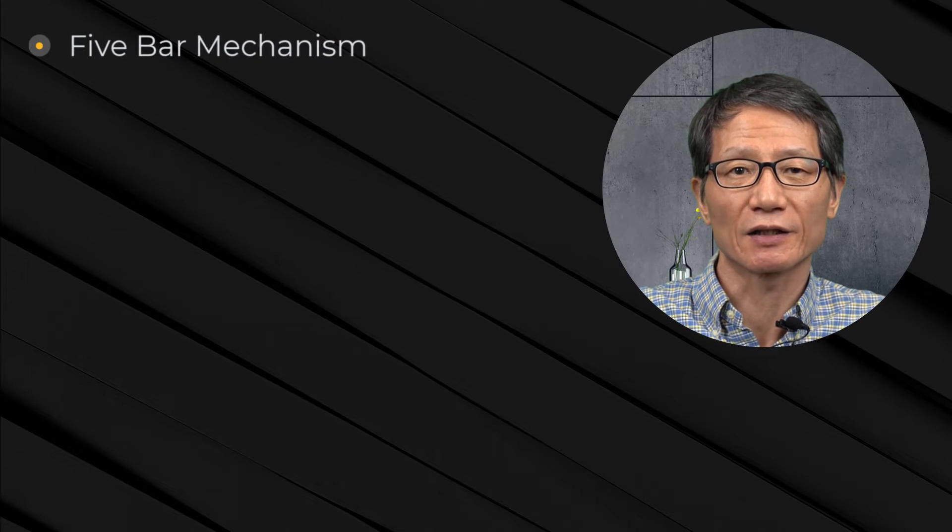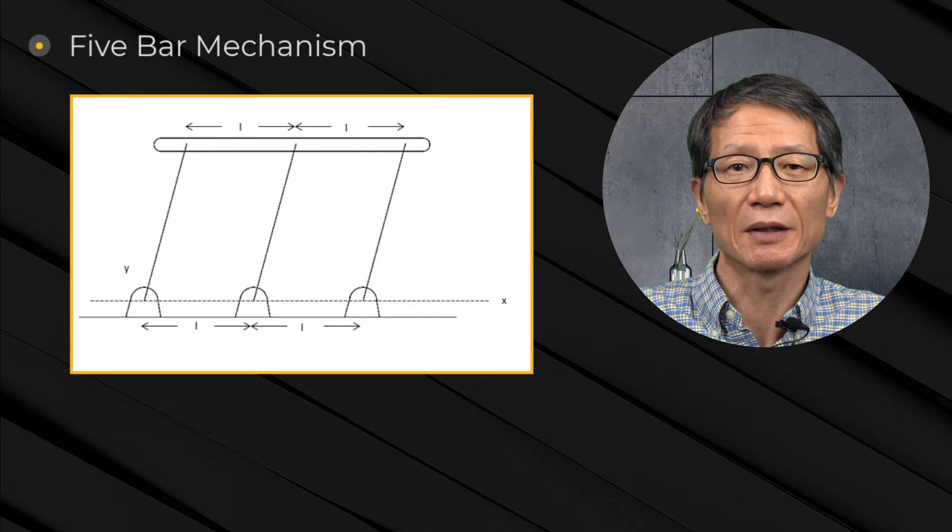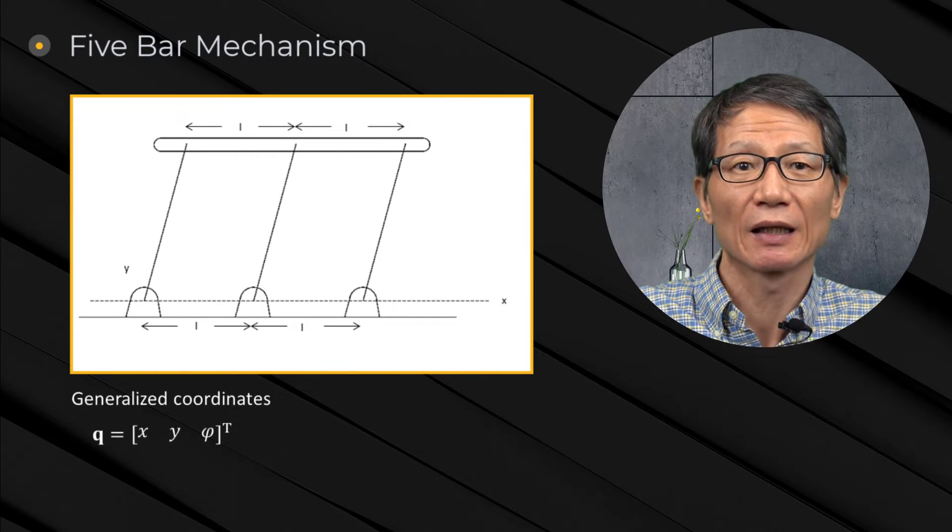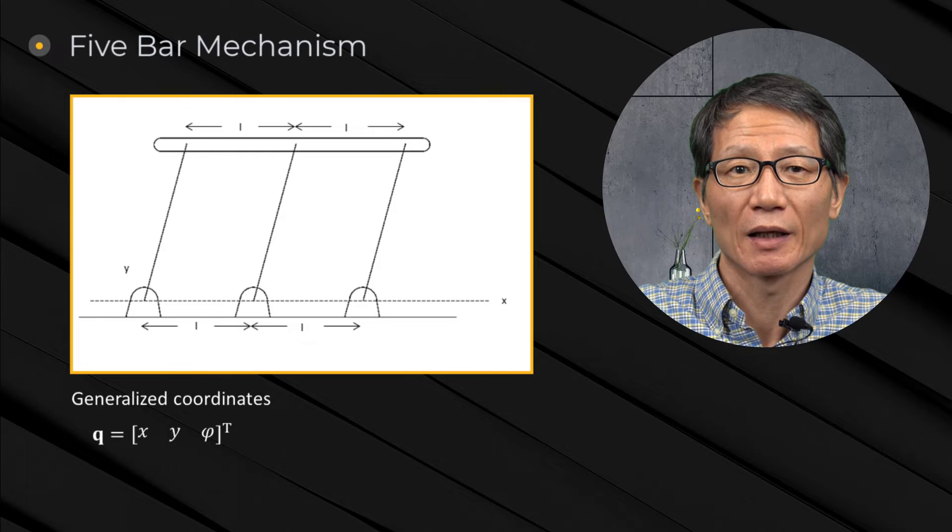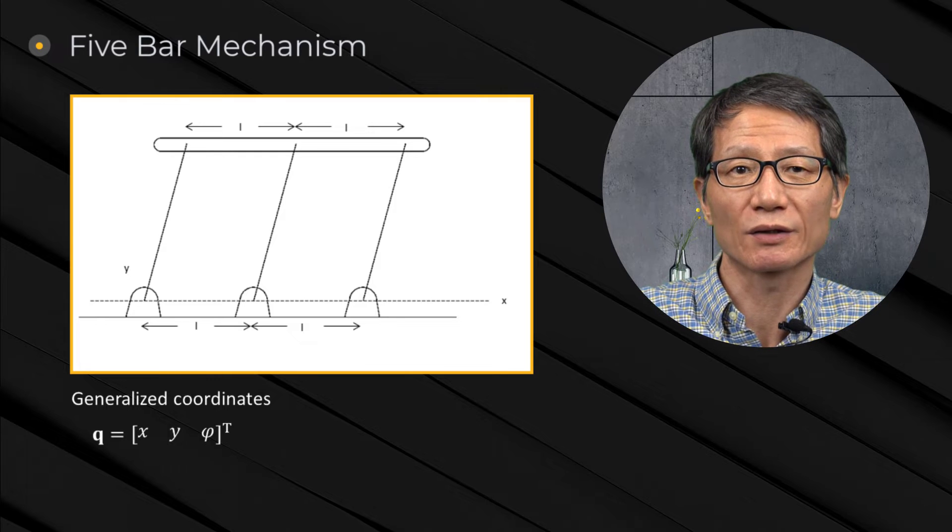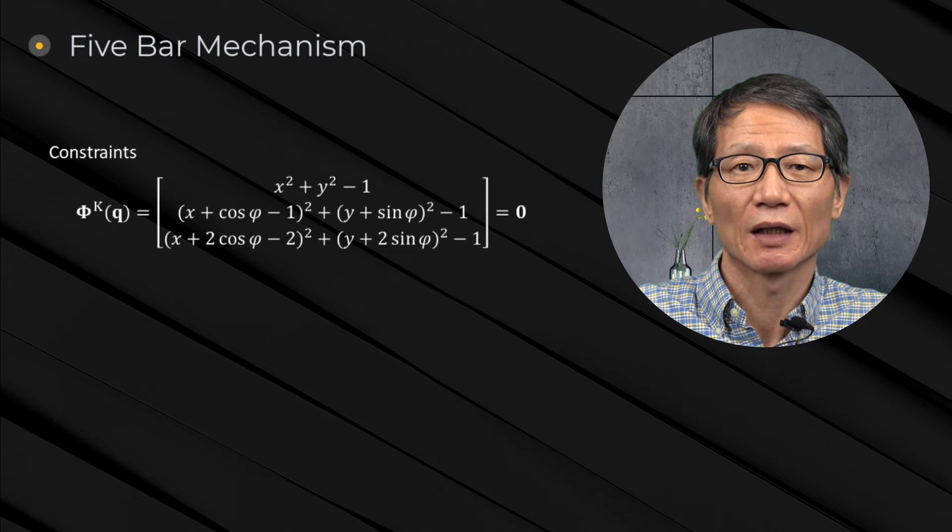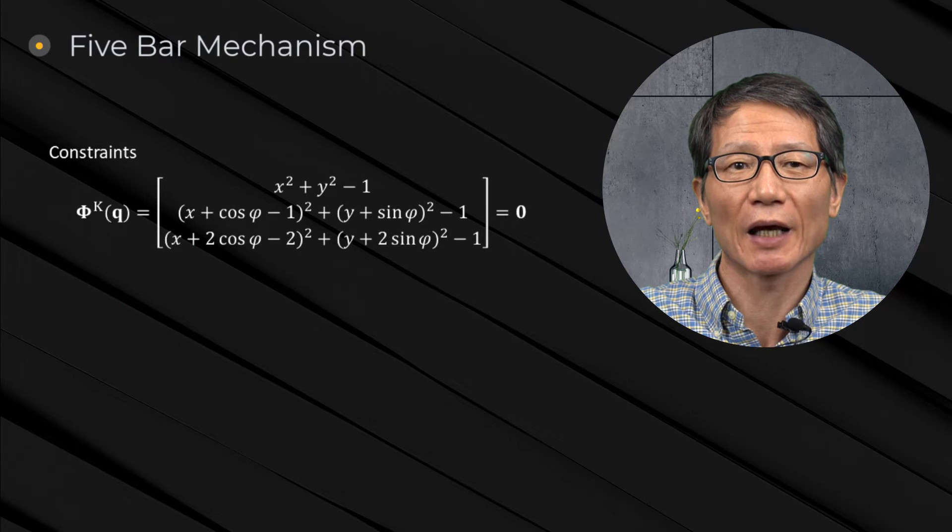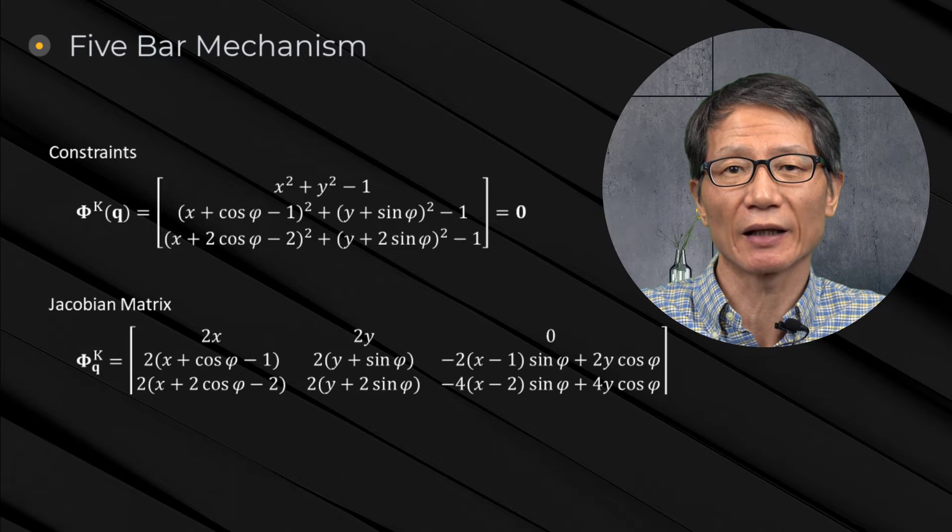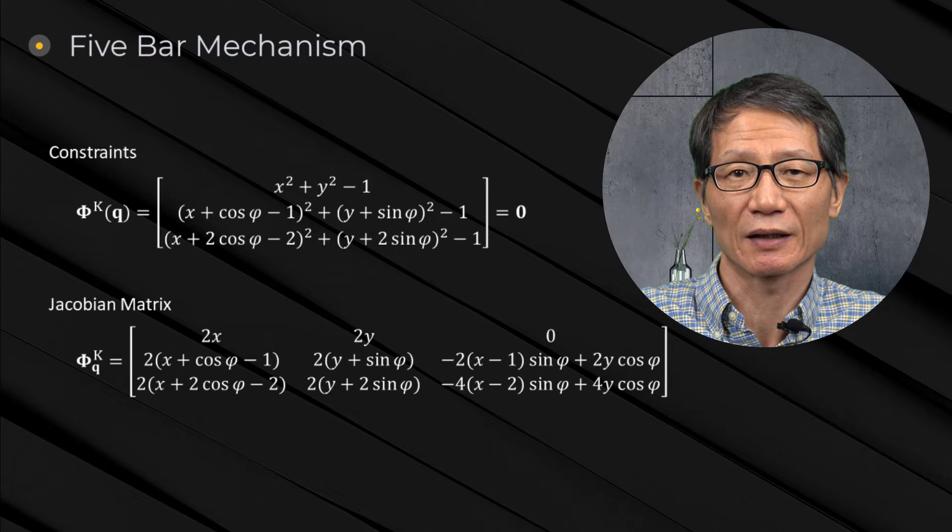As an example, in this five-bar mechanism, the middle bar is not necessary kinematically. This can be shown with the constraint equation and its Jacobian matrix as follows. The constraints can be obtained as in this equation and its Jacobian as follows.